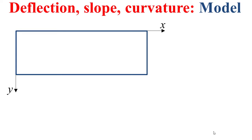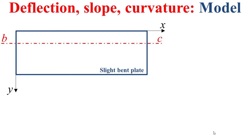Let's consider a plate depicted here in blue. This plate is in the plane defined by the directions x and y, and we consider that this plate is slightly bent. Let's examine the deflection of this plate along the line BC, which is parallel to the direction x.